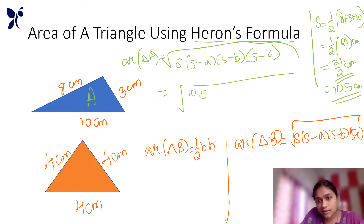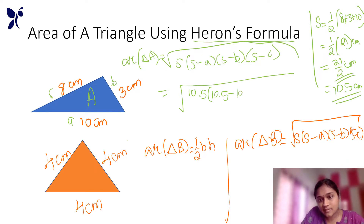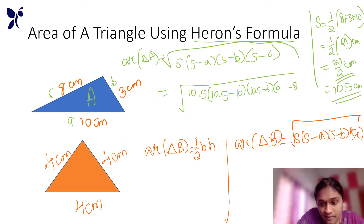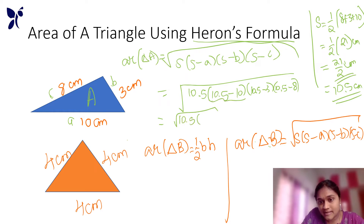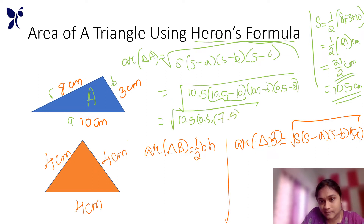Now we apply: 10.5 into (10.5 minus a) into (10.5 minus b) into (10.5 minus c). A is the first side, B is the second, C is the third. So: 10.5 minus 10 is 0.5; 10.5 minus 3 is 7.5; 10.5 minus 8 is 2.5.